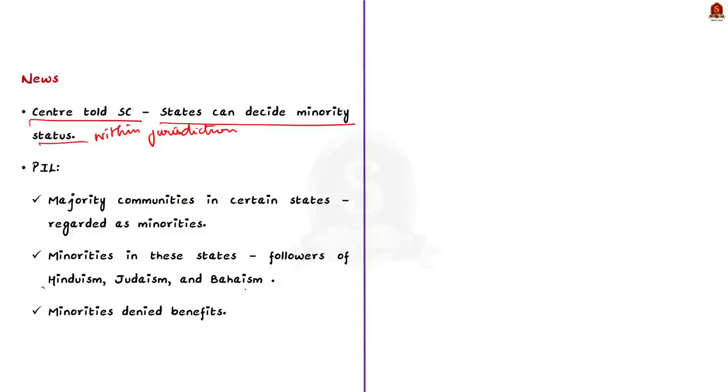The petition argues that Muslims, Sikhs, Buddhists are majority people in these states, but they have been given the minority status depending on their national minority status. So, the petitioner argued that the followers of Hinduism, Judaism, and Bahaism are a demographic minority in these states. And yet, they are denied the benefits given by the central government for minorities because at the national level, they are not considered as minorities. And on this petition only, now the Supreme Court is deciding.